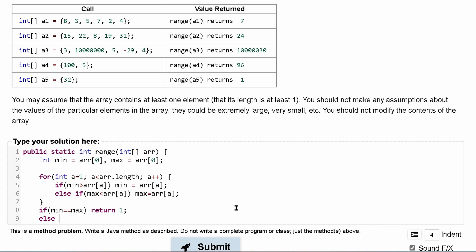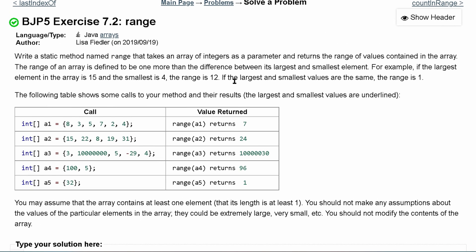Otherwise, we can do a return of our max minus our min and then plus one. Because I definitely read that in the instructions, where it's the difference between largest and smallest, but one more than that.